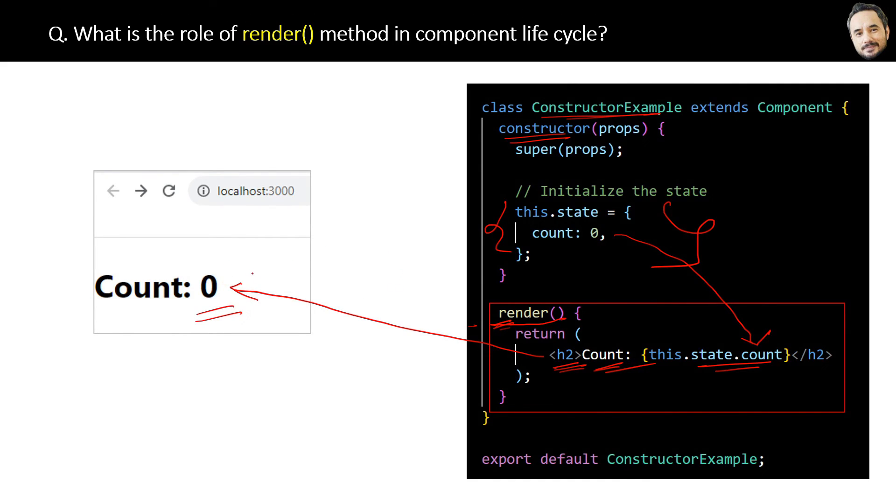The simplest definition of the render method is: the render method returns the React elements that will be rendered to the DOM. Now one suggestion here for interviews - better to use technical words like DOM in interviews rather than using words like UI or browser, because then you will sound more technical to the interviewer and that will be great.